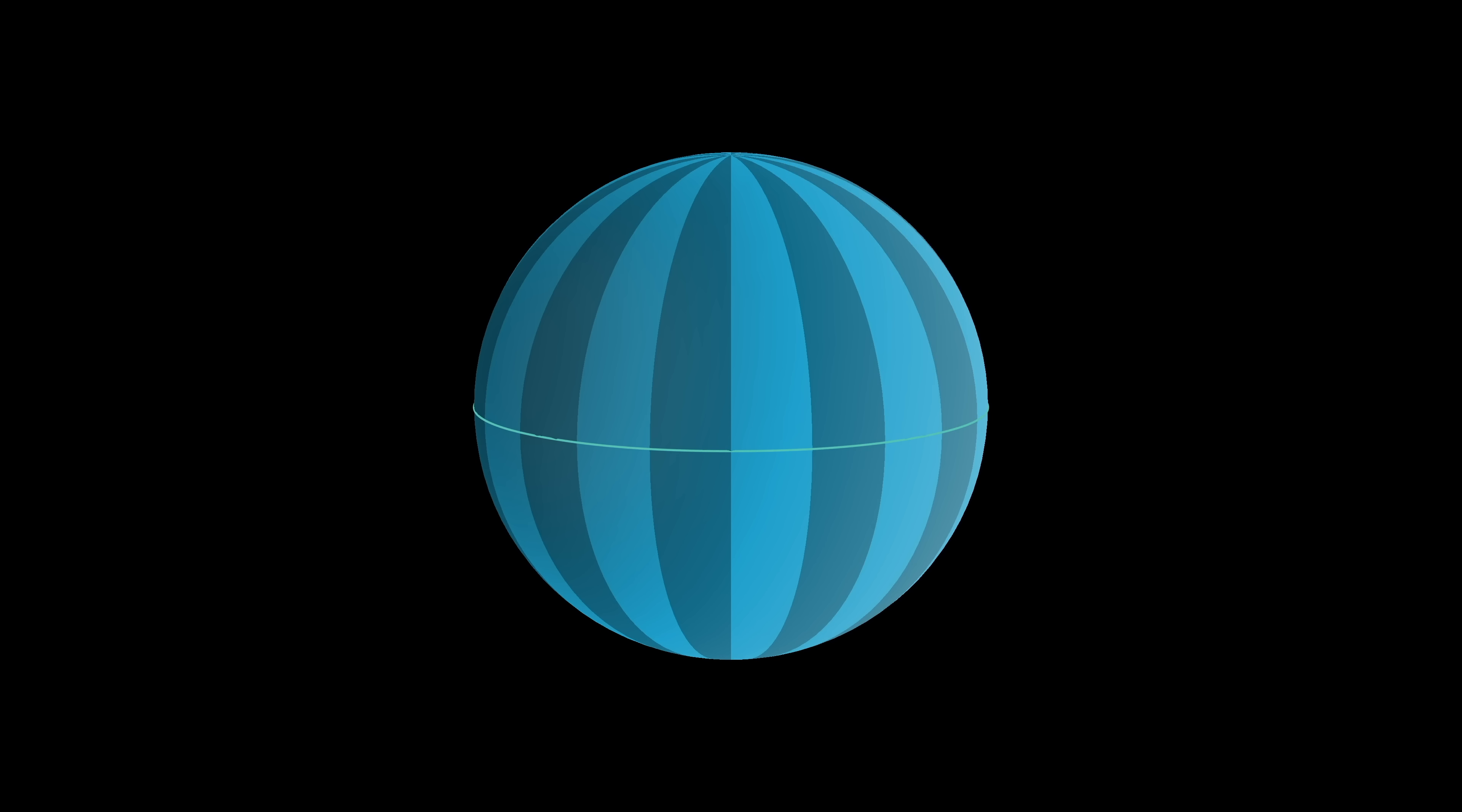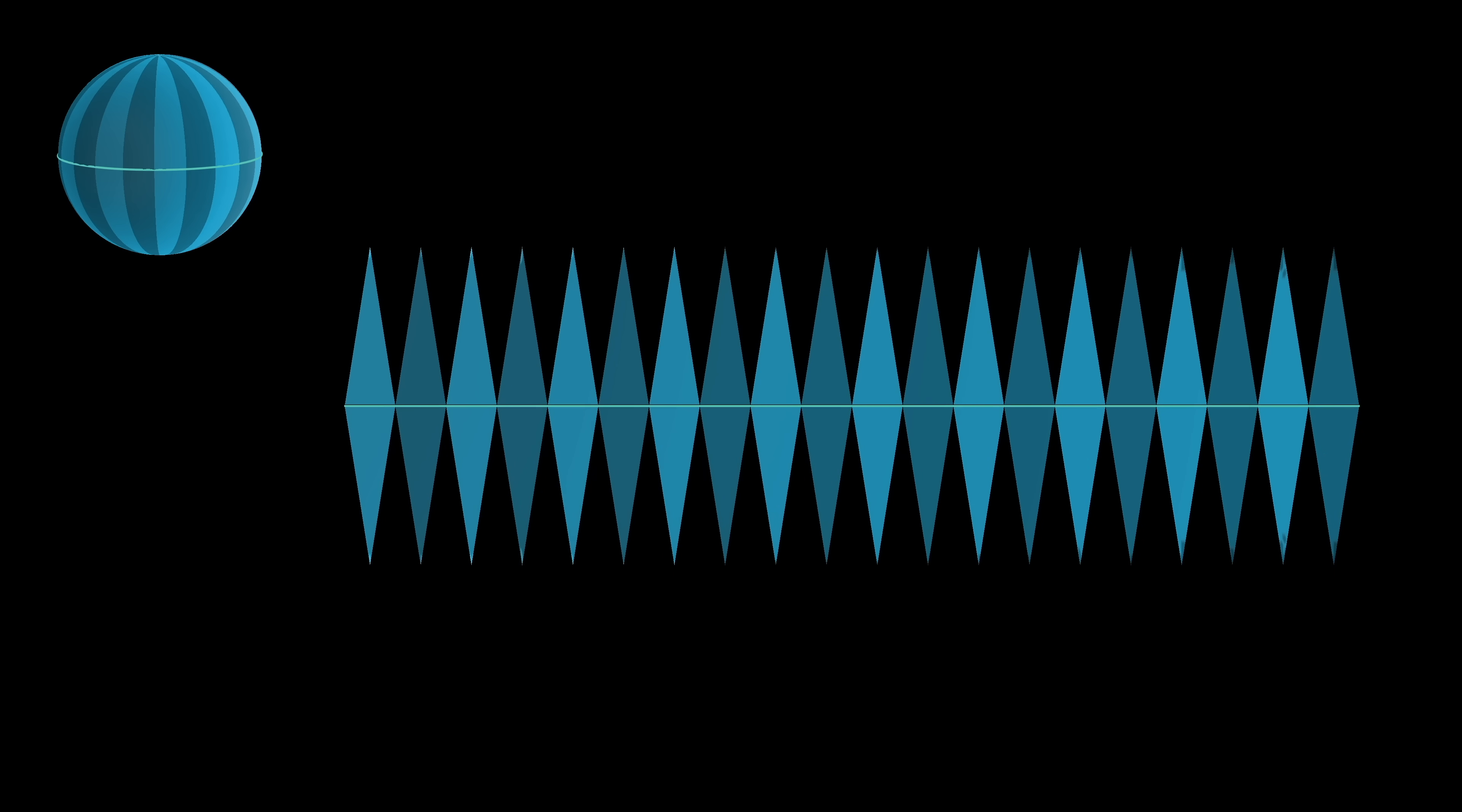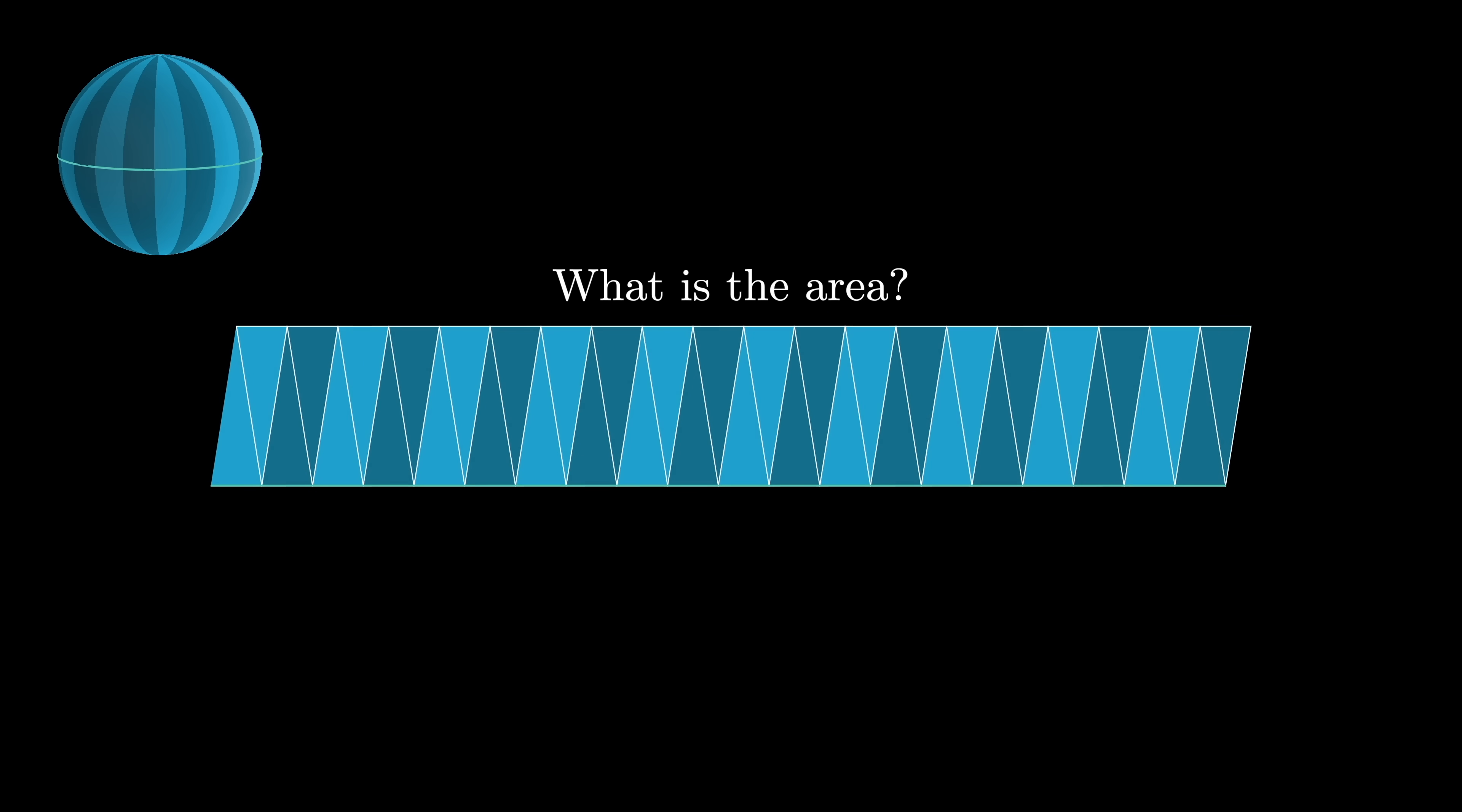We then unravel all of those wedge slices from the northern hemisphere so that they poke up like this, and then symmetrically unravel all of those from the southern hemisphere below, and now interlace those pieces to get a shape whose area we want to figure out. The base of this shape came from the circumference of the sphere, it's an unraveled equator, so its length is 2π times the radius of the sphere.